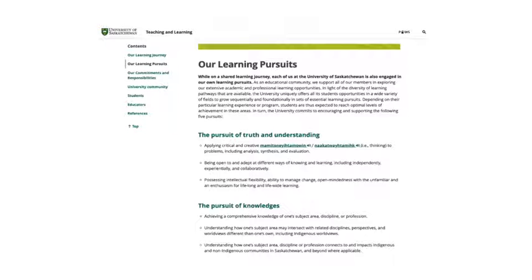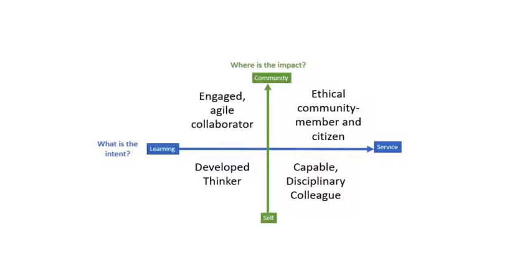The University of Saskatchewan Learning Charter includes learning pursuits, which are what we as faculty, staff, and students strive to achieve in our efforts to become the university the world needs. This quadrant model is a way to organize the pursuits into four main areas of competence that an education at USask should prepare students for. Individual pursuits may cross multiple areas, with some reaching into all four.